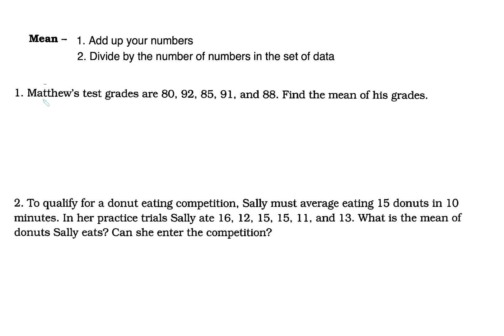Our first question states that Matthew's test grades are 80, 92, 85, 91, and 88, and we have to find the mean of his grades. Therefore we're going to add up all of Matthew's grades: 80 plus 92 plus 85 plus 91 plus 88, and we're going to divide by 5 — there are five numbers in the data set. For most mean questions you will need your calculator, unless they give you a small data set with single digits.